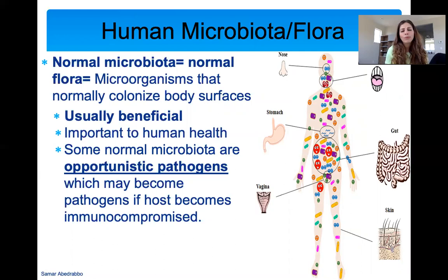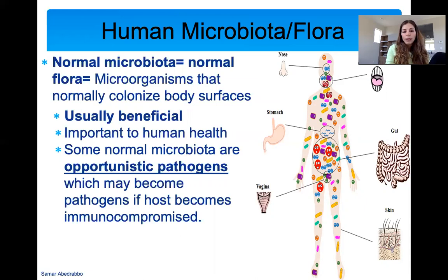There are a lot of studies being done constantly, discovering functions of the microbiome we didn't know about. Our microbiome is very important to human health. But keep in mind that even though most are beneficial, some normal microbiota are opportunistic pathogens — meaning they can become pathogens if we become immunocompromised. They're not pathogens normally, they're just living on you and everything is fine. But if you become immunocompromised, that's when they can become a pathogen.